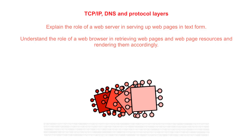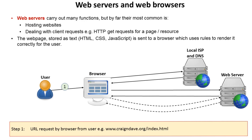In this video we're going to look at web servers and web browsers and explain how information is retrieved and exchanged between them. Web servers carry out many functions, but by far the most common is hosting websites and dealing with requests from clients — for example, a HTTP GET request requesting a page to be returned to a user's browser. The web pages are stored on the server as text in, for example, HTML5, CSS, and JavaScript.